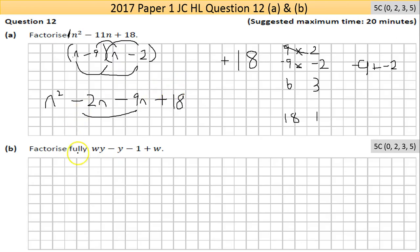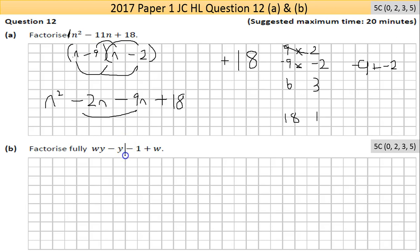Now back to part B — factorize fully the expression wy minus y minus one plus w. At Junior or higher level you might have to rearrange these, but I've done that already. It's a simpler version. Let's split the expression in two and look for what's common in the first two terms.